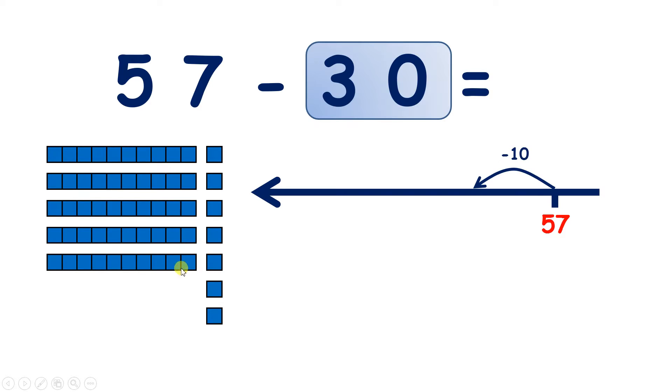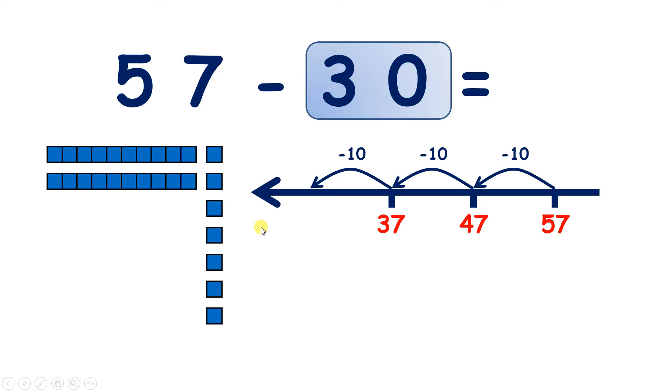Subtract 10 and we have 47. Subtract 10 more and we have 37. But we want to subtract 3 tens, so subtract one more 10 and we're left with 27. So we've subtracted 30 because we've taken away 3 tens. So 57 take away 30 equals 27.